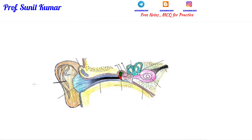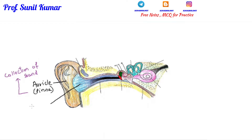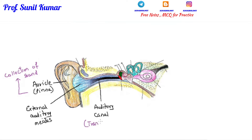The outermost part is called the auricle or the pinna. The most important function of the pinna is the collection of sound — whatever sound enters the ear, it enters through the auricle or pinna. Moving inside the auricle, we find the external auditory meatus, which forms a cone-shaped structure. The auditory canal helps in the transfer of sound from the auricle to the eardrum.